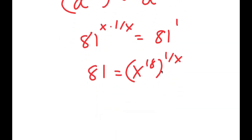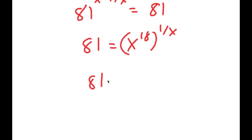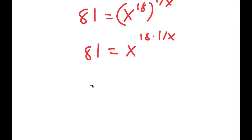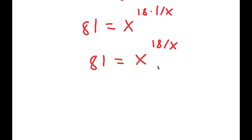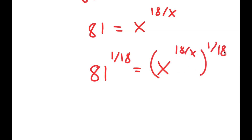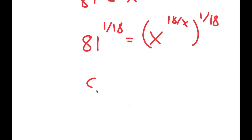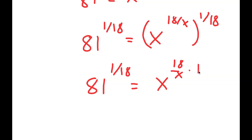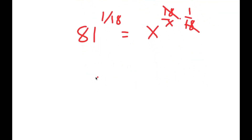So I get 81 is equal to x to the power of 18 to the power of 1 over x. And x to the power of 18 to the power of 1 over x is the same thing as x to the power of 18 times 1 over x, which is x to the power of 18 over x. Now I'm going to take the power of 1 over 18 on both sides, so I get 81 to the power of 1 over 18 is equal to x to the power of 18 over x times 1 over 18. The two 18s cancel out, giving 81 to the power of 1 over 18 equals x to the power of 1 over x.